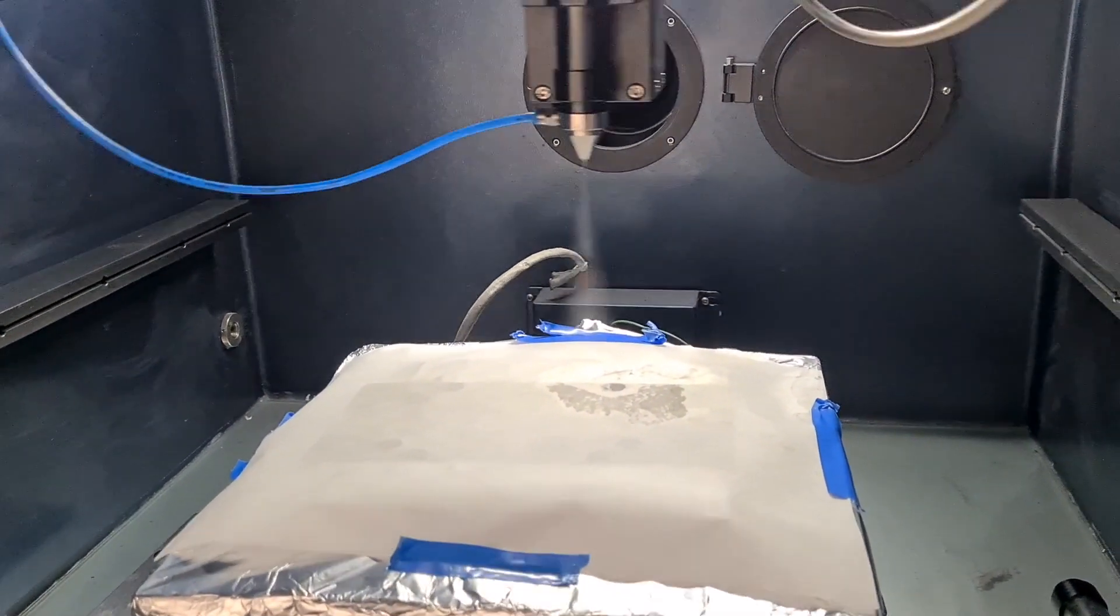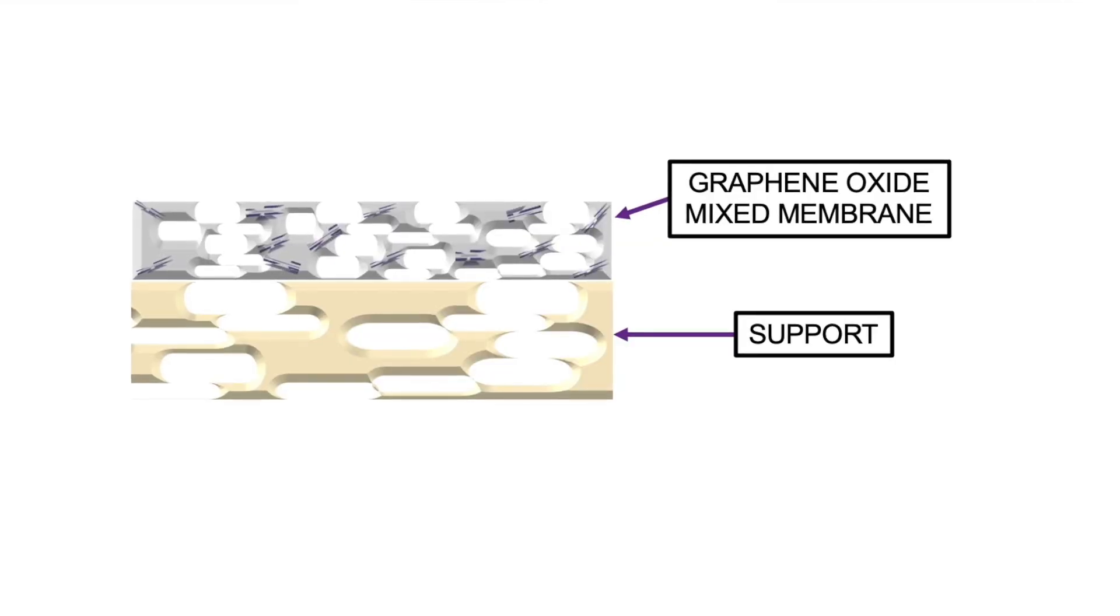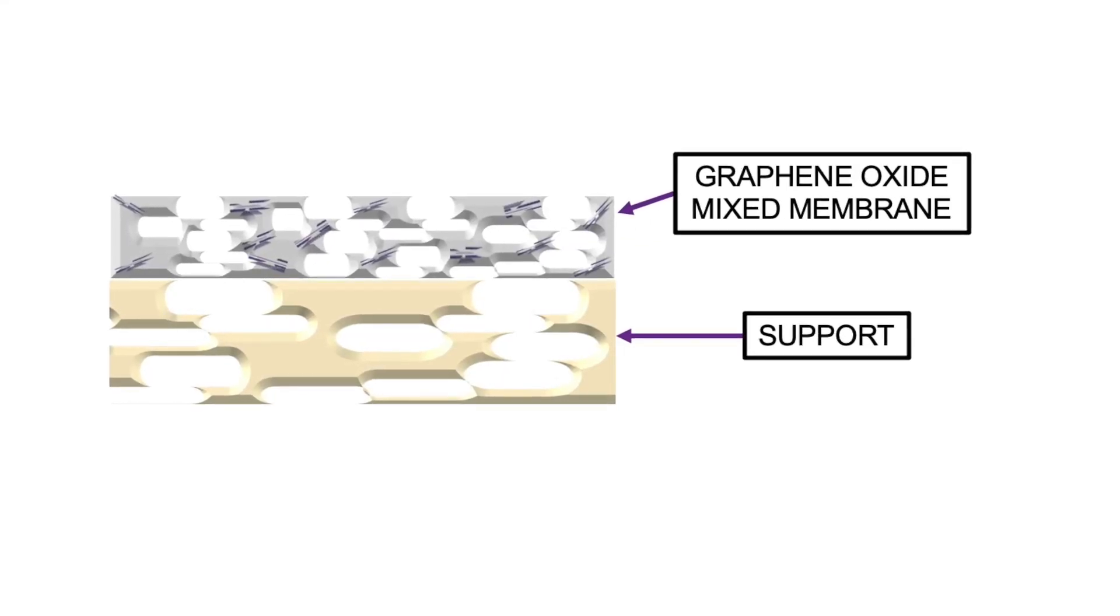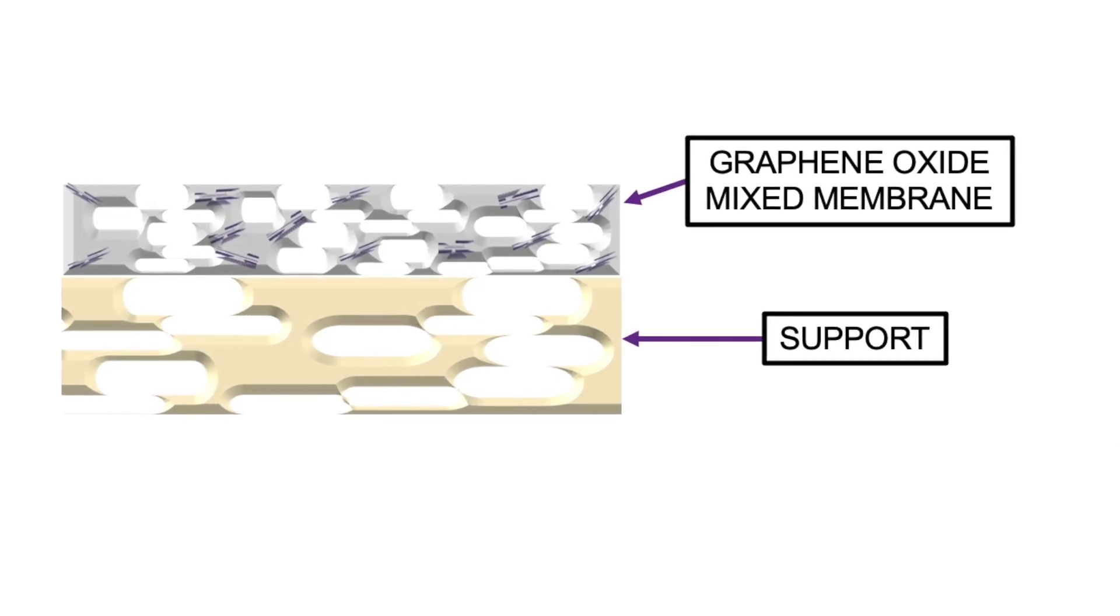We might instead want a membrane composite where the graphene is blended and mixed into the polymer membrane itself. This leads to them being more robust and also having higher flux when compared to membranes without the graphene. These methods that we've just shown are great for researchers to make membranes on the small scale.